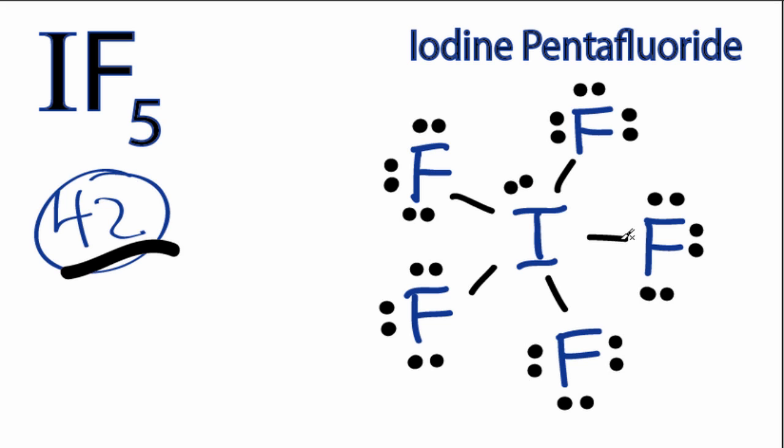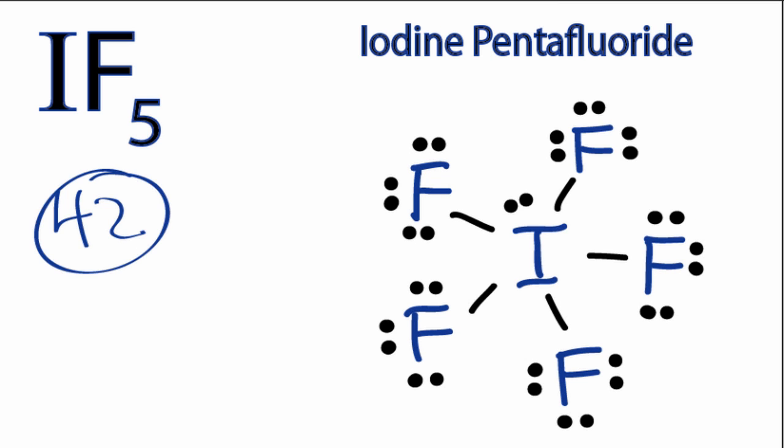Iodine has 2, 4, 6, 8, 10, 12, but that's fine. If you check the formal charges for each of the atoms in this molecule, you'll find that they're 0. So this is the Lewis structure for IF5.